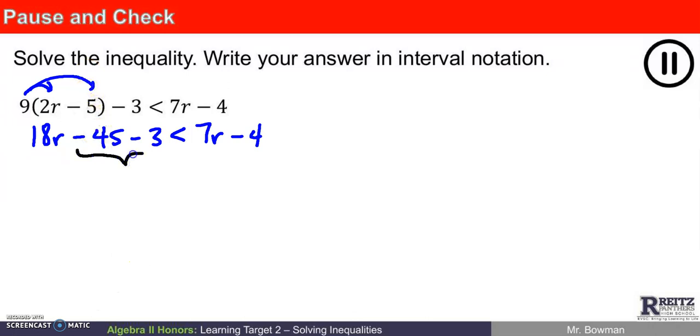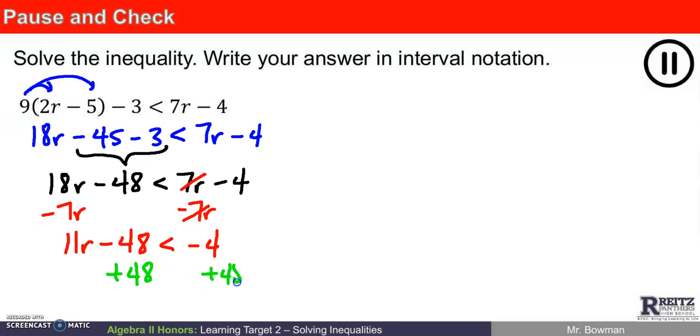I see some like terms here that might be worth combining. On the left side of the inequality, negative 45 minus 3 would be negative 48. And now I'm in a pretty familiar situation. I need to isolate my r's and my real numbers. I've got a 7r here and 18r here. Let me subtract 7r from both sides. To remain 11r minus 48 is less than negative 4. If I now decide that I'm going to add 48 to both sides, these cancel.